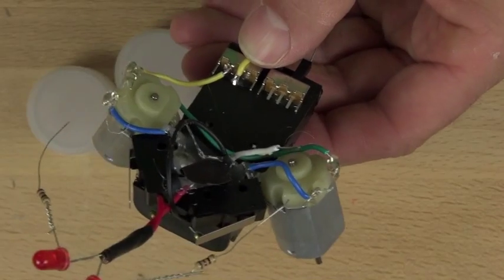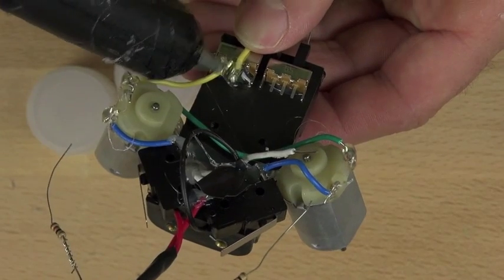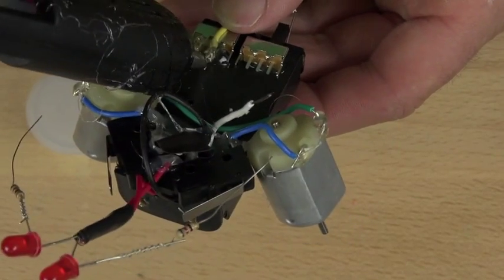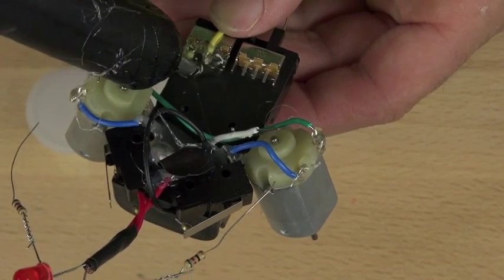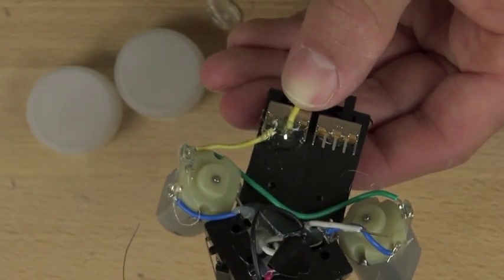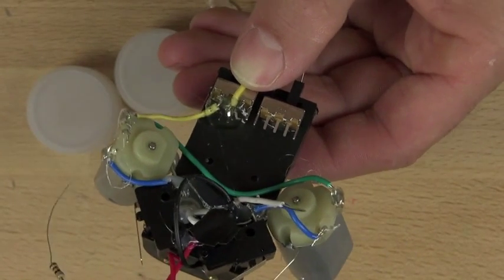So now we're going to go ahead and hot glue that connection in place now that we know that it works. And again, basically what this switch is doing is it's allowing us to convert our batteries, which are wired in series, which double the voltage, to parallel, and that allows us to double the capacity and run the motors at a little bit of a slower speed.